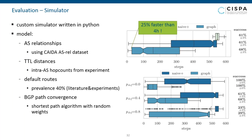To prove the point, we re-ran experiments in an ideal world with zero default route prevalence. In that case, the number of steps decreases significantly and the success rate skyrockets to 100%. At the other extreme, with 80% of all ASes having a default route, the graph-based algorithm still succeeds in roughly 30% of all cases, but the runtime gets much, much worse.